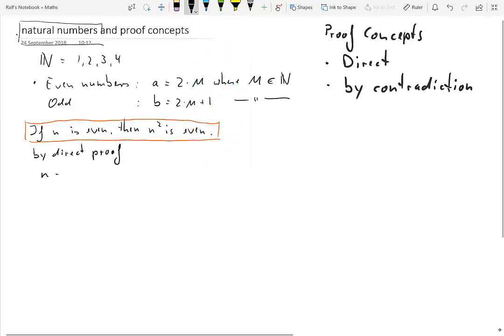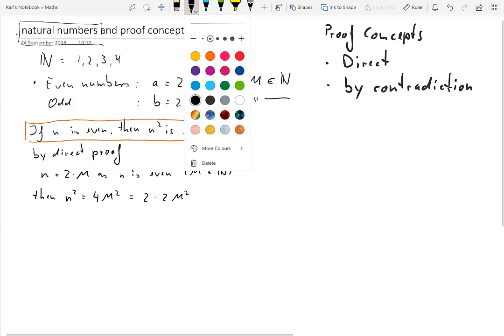We start out by the characterization of n. As it is even, it can be represented as 2 times m where m is a natural number. So m is an element of natural numbers. If that is the case then we can express n squared as 4 times m squared. So let's see why that helps us. We will reformulate 4m squared as 2 times 2 times m squared.